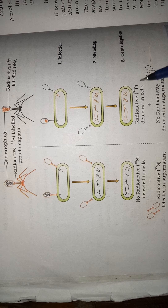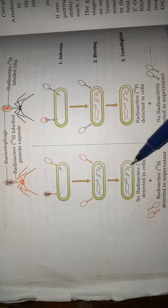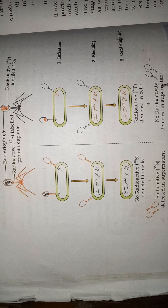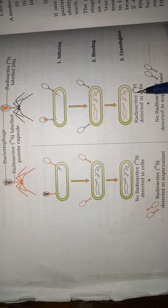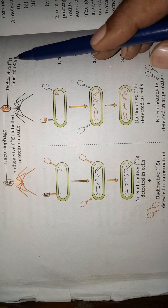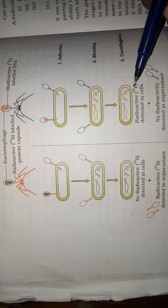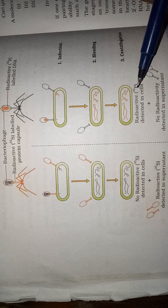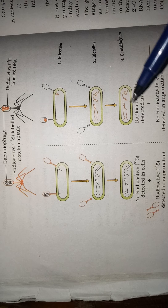The radioactivity P32 is detected in the cells, which means DNA is transferred from the virus particle into the cells, but protein is not transferred. We can experimentally prove that there is no P32 radioactivity in the supernatant — only in the cells. Since the cells contain the P32 radioactivity, the genetic material carrying that label was transferred from the virus particle to the cells. Therefore, the genetic material is DNA. This experimentally proves that DNA is the genetic material and protein is not.